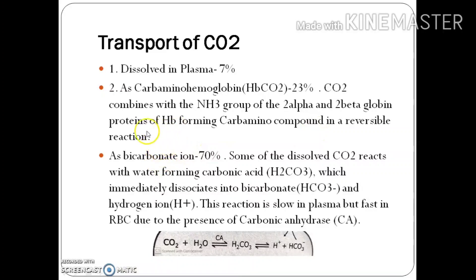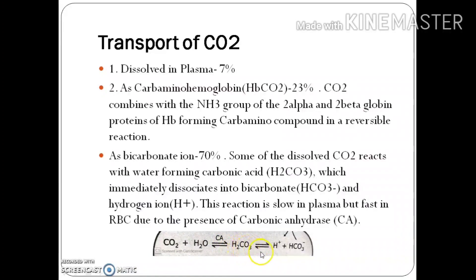Most CO2 transport — nearly 70% — takes place as bicarbonate ions (HCO3-). Some dissolved CO2 reacts with water forming carbonic acid (H2CO3), which immediately dissociates into bicarbonate (HCO3-) and hydrogen ions (H+). This reaction is slow in plasma but fast in the RBC due to the abundance of the enzyme carbonic anhydrase. Under carbonic anhydrase catalysis: CO2 + H2O → H2CO3 → H+ + HCO3-.